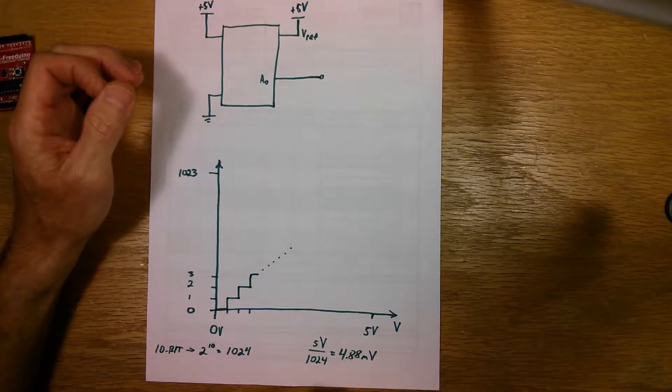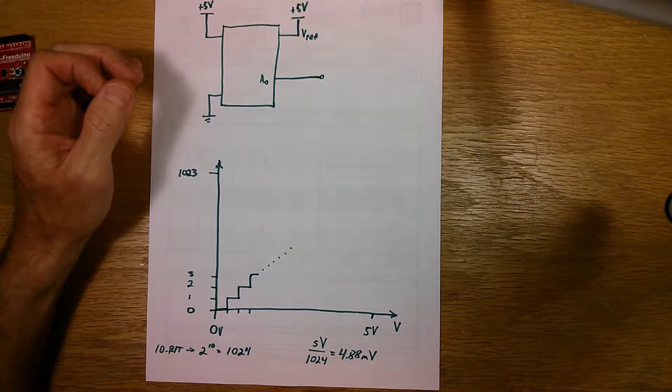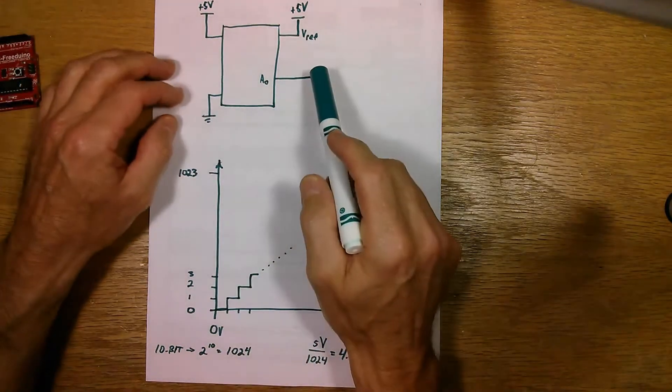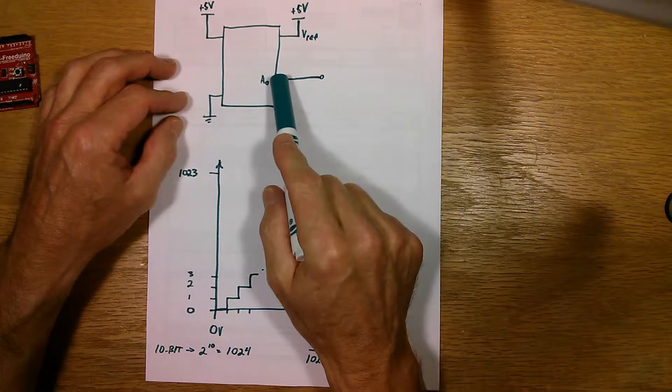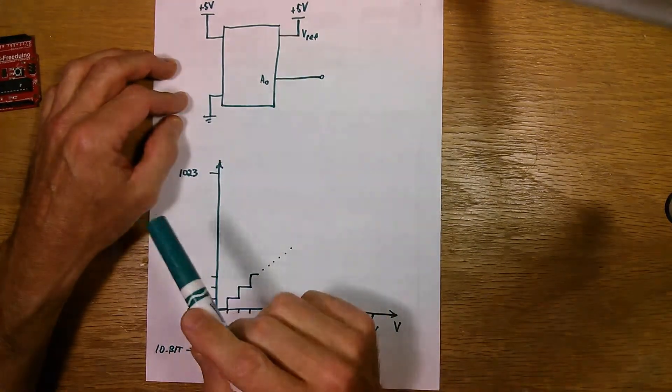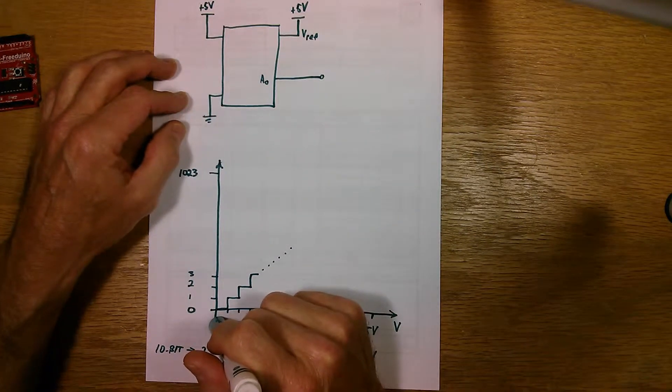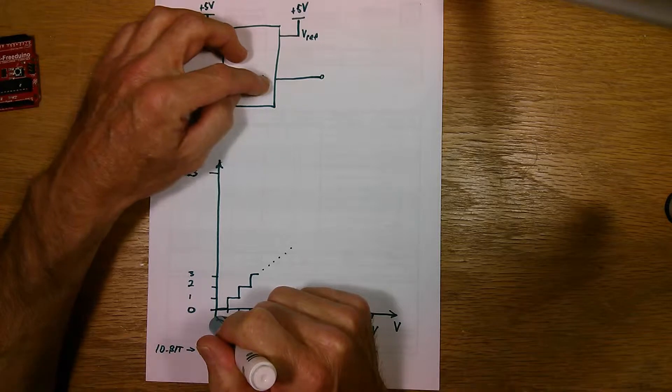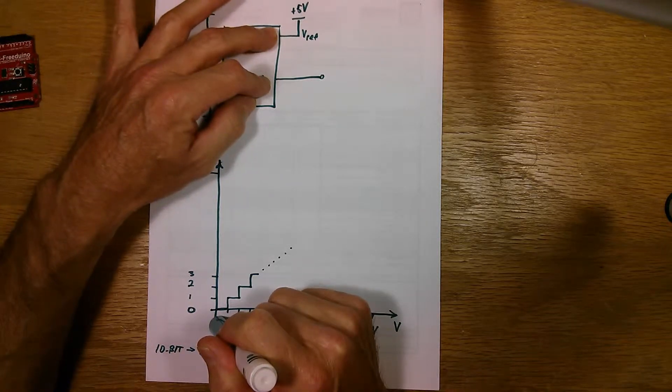But it's around five volts. Now, what an analog digital converter does is it compares the voltage on the analog pin to the five volt V reference. And it gives a ratio, a number, that's a ratio of where the analog voltage is compared to the five volts.